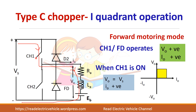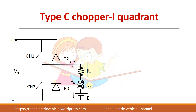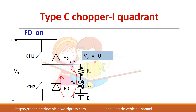When the switch is off, the current circulates through the freewheeling diode, and in this case the output voltage will be zero. So in first quadrant operation, switch one plus the freewheeling diode are used — it is a simple structure like a buck converter.